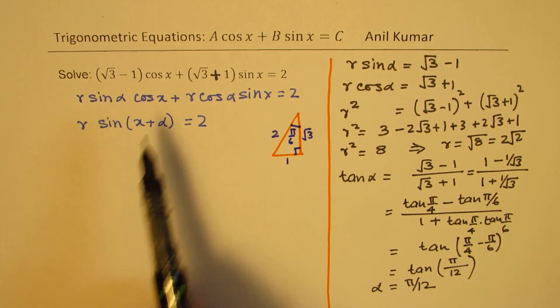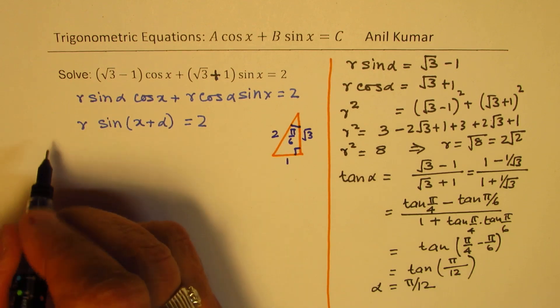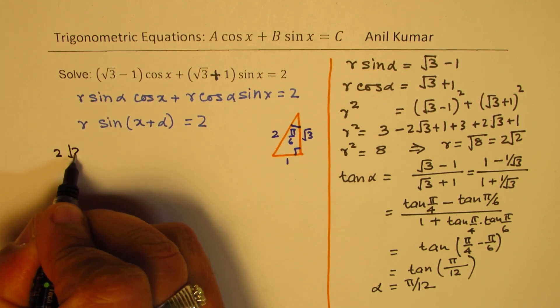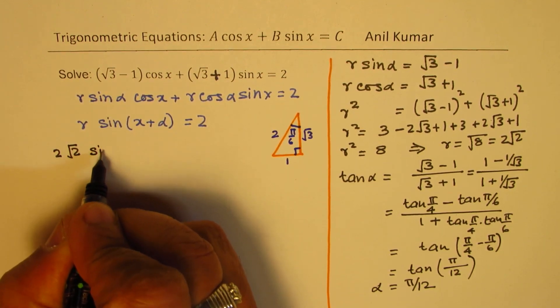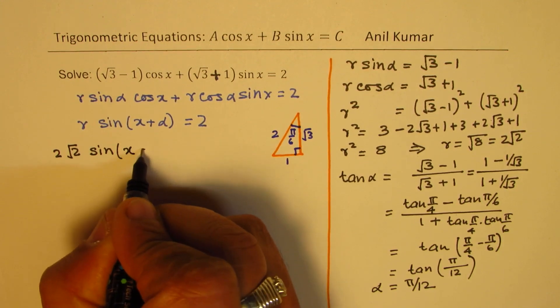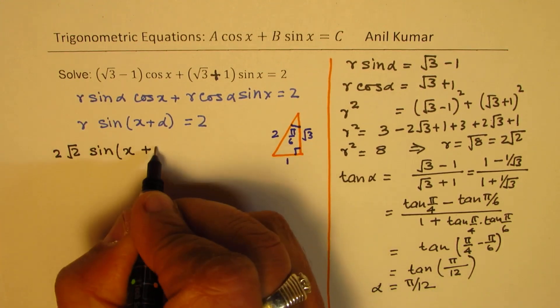So we could write this as r is 2 square root 2, so we get 2 square root 2 sine of x plus alpha, which is pi by 12, equals to 2.